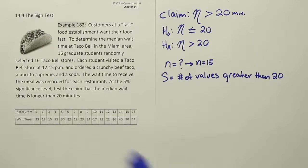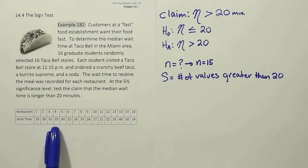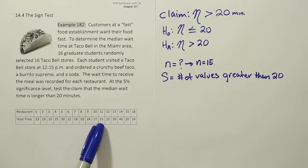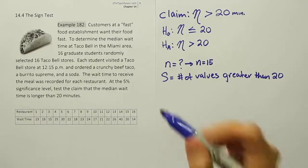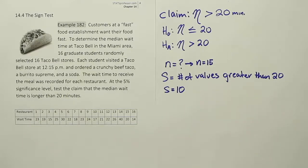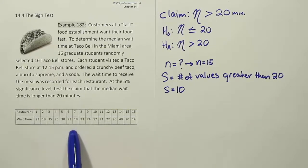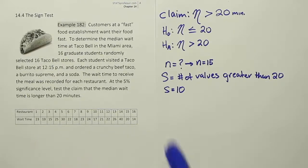Looking at the list, how many numbers are greater than 20? Well, 23 is greater than 20, that's 1. Counting through: 2, 3, 4, 5, 6, 7, 8, 9, 10. I count 10 values greater than 20. To double-check, count how many values are less than 20. Since N is 15, we should find 5. Sure enough, 1, 2, 3, 4, 5 are less than 20. So the count greater than 20 is 10, and we now have our test statistic S equals 10.